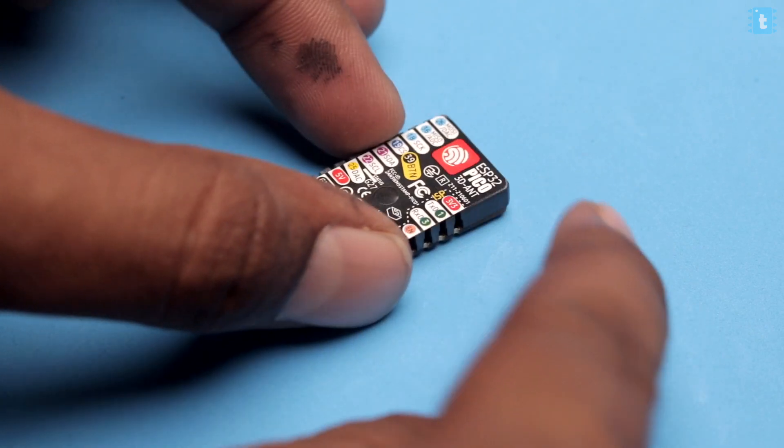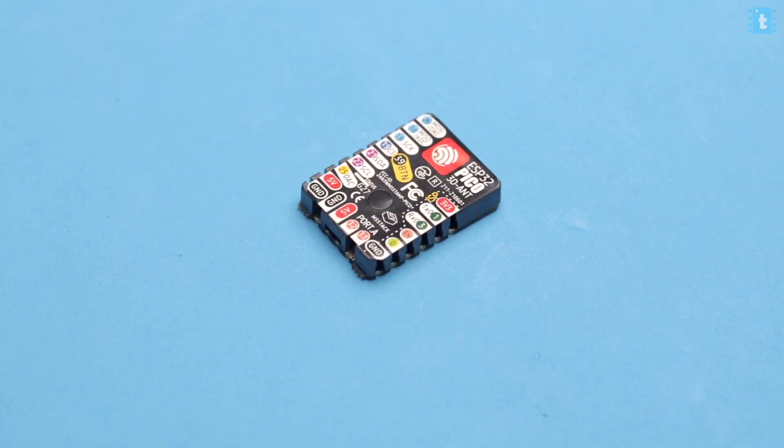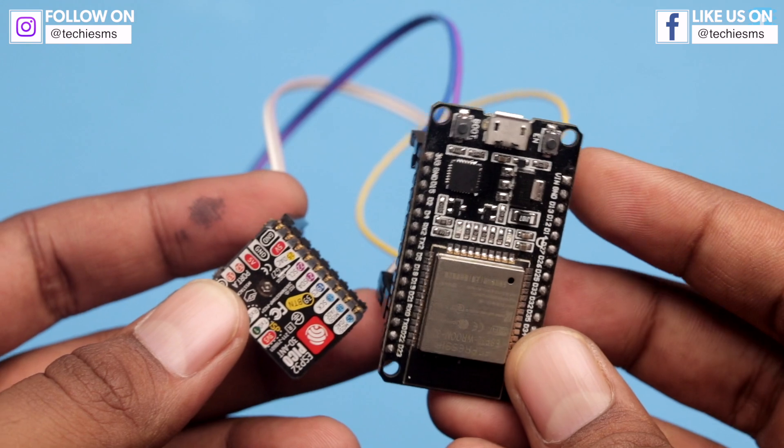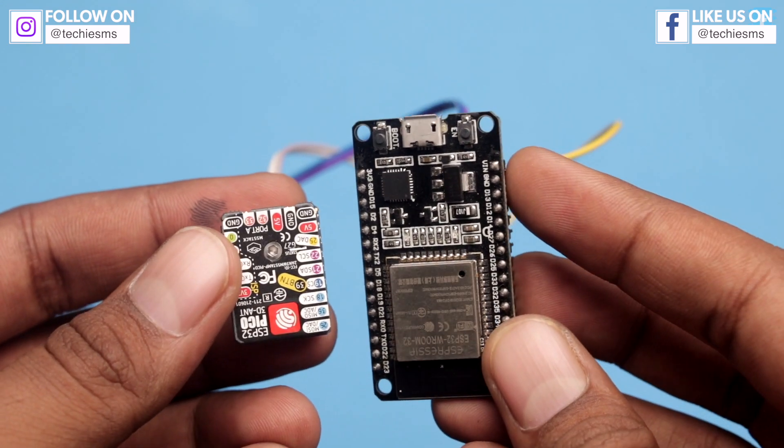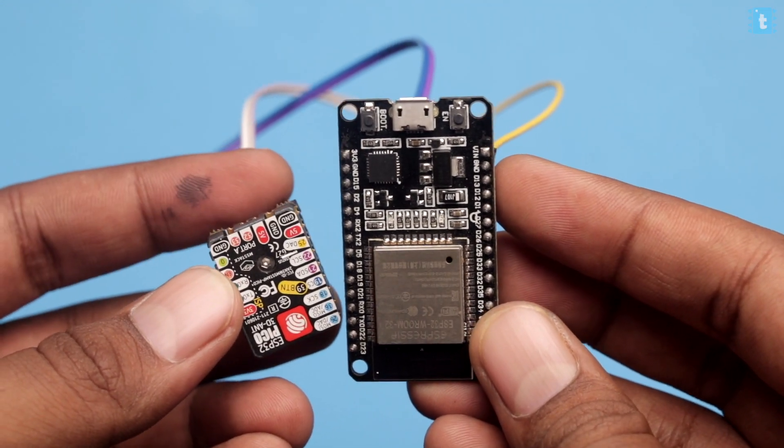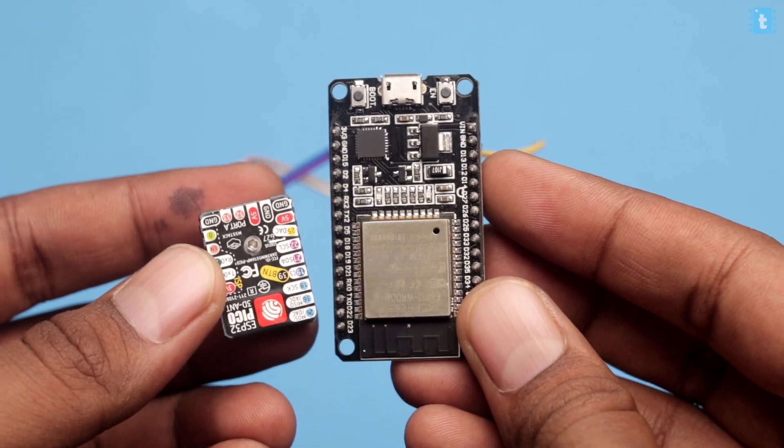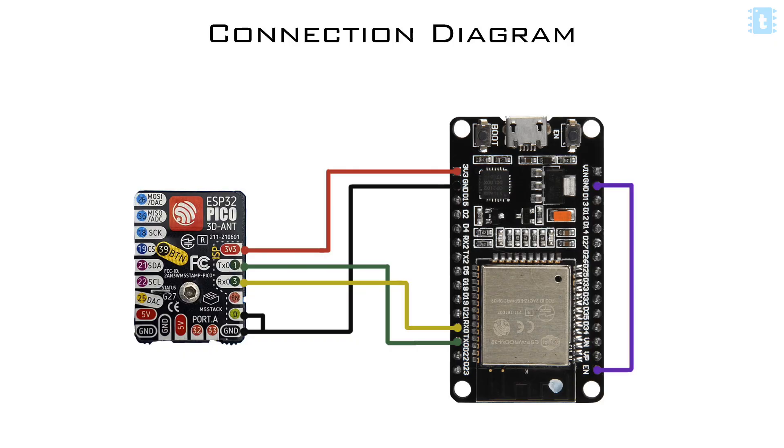Now let's jump onto the computer to see how to use it. I'll be using my ESP32 development board to upload the program onto this stamp module. You have to make the connection between the ESP32 board and the M5 stamp according to the circuit diagram.